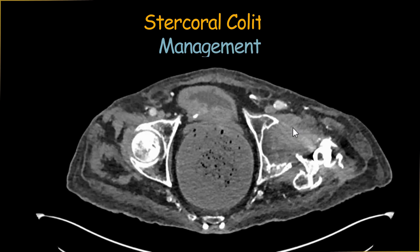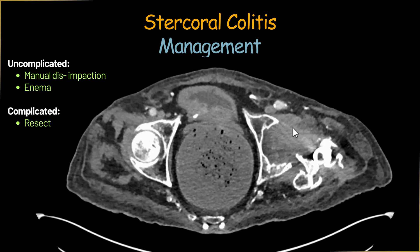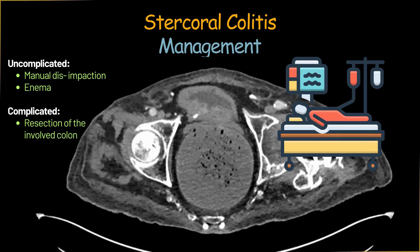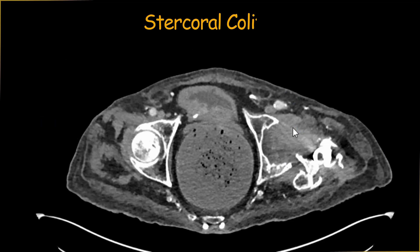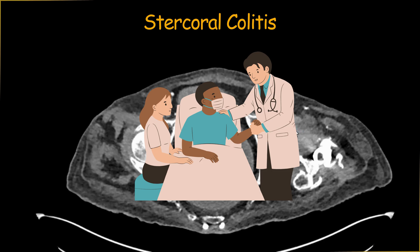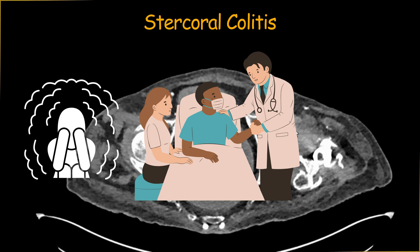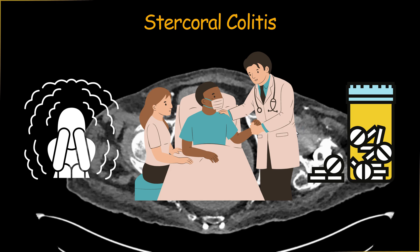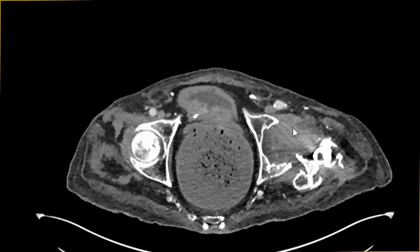In uncomplicated cases of stercoral colitis — where ischemia has not yet ensued — management can be manual disimpaction of fecal matter or use of enema. In complicated cases where ischemia has already developed, or there is bowel perforation or portal venous gas, surgery is needed — usually resection of the involved colonic segment with fashioning of a colostomy. These patients are already doing poorly due to comorbidities, so it is very much a surgical decision. Although stercoral colitis is commonly seen in elderly patients, young patients can also rarely develop it, especially with underlying neurological impairment or use of opiates and tricyclic antidepressants that slow bowel movement.